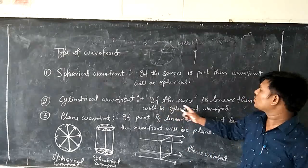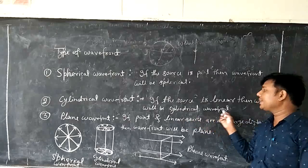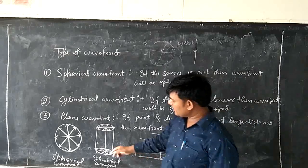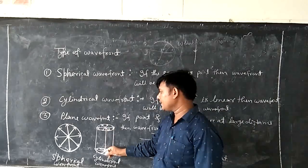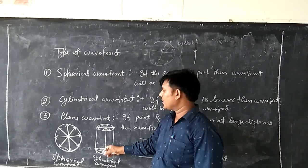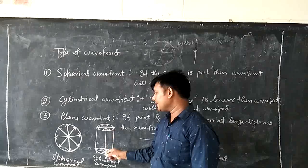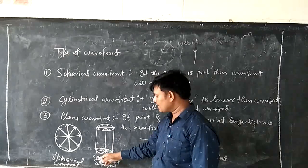If the source is linear, then wavefront will be cylindrical wavefront. Now let us draw this. This line is the baseline, this is a linear source. This is a cylinder, this is a cylinder.